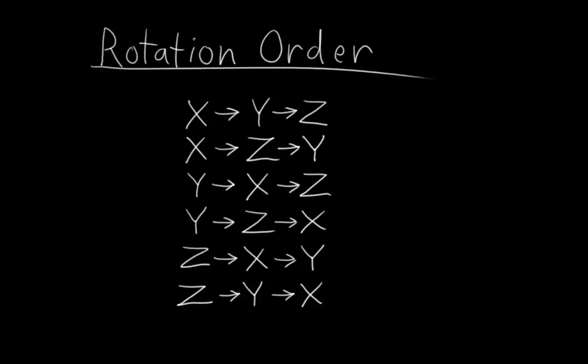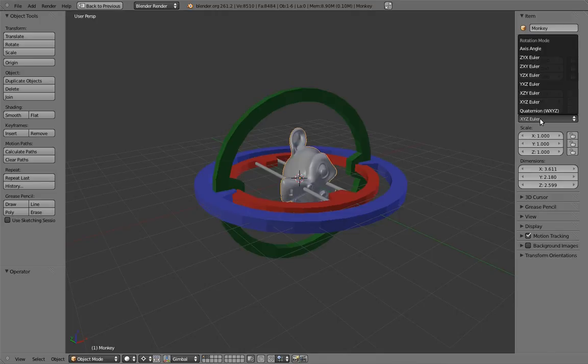Blender has a simple way to choose this. In the rotation mode menu, you see a bunch of Euler options. The x's, y's, and z's next to each of those indicate the rotation order from left to right. So for example, zxy Euler means an Euler rotation that rotates on the z-axis first, then the x-axis, and finally on the y-axis.